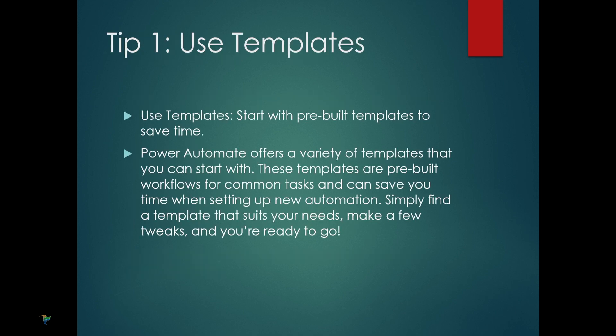First up is: use templates. Power Automate makes it easy to get started with automation by offering a variety of pre-built templates. These templates are designed for common tasks and can save you a lot of time. Instead of building workflows from scratch, you can simply choose a template, customize it to fit your specific needs, and get your automation up and running quickly.